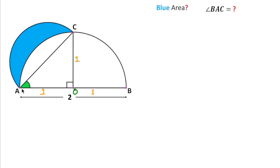As we can see, AOC is a right angle triangle, so using Pythagoras theorem in triangle AOC we can write AC equal to square root of 1 squared plus 1 squared, which is equal to root 2.